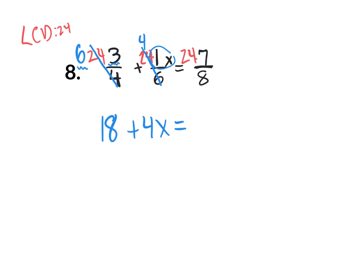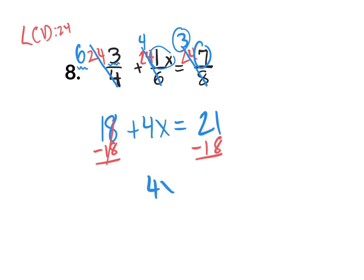Continuing: 24 divided by 8 is 3, and 3 times 7 is 21. So all three fractions are eliminated. Now get x by itself — get rid of the 18 first by subtracting 18 on both sides. New equation: 4x equals 3. That's really 4 times x equals 3. To get rid of the multiplication of 4, divide by 4 on both sides. x equals three-fourths. If you put the decimal 0.75, that's also correct.